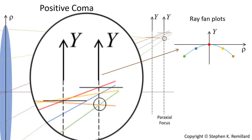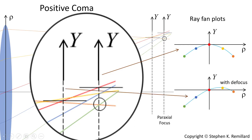Coma aberration shows up as a concavity in the ray fan plot — positive coma is concave down, negative coma is concave up. Moving along the optic axis to another point, the ray fan plot remains concave down except the peak location shifts. When you introduce defocus, rays pierce the image plane higher than the chief ray. The distance between where the marginal rays focus and where the chief ray pierces the image plane is the tangential coma, as opposed to sagittal coma.